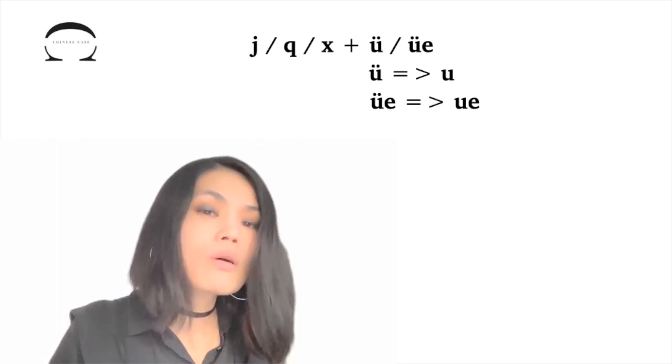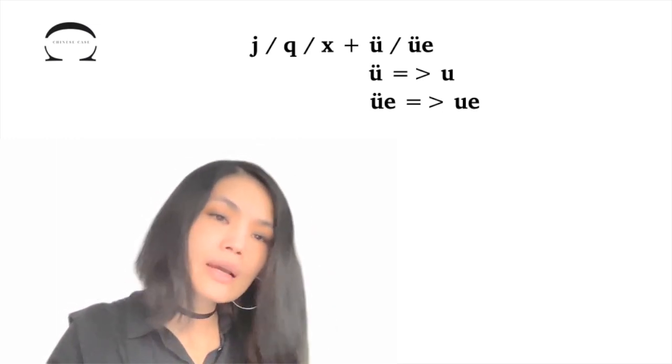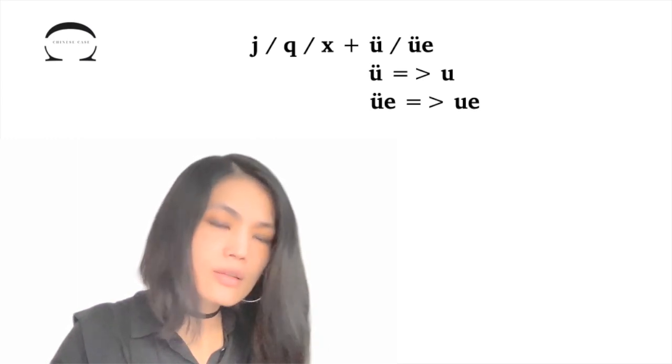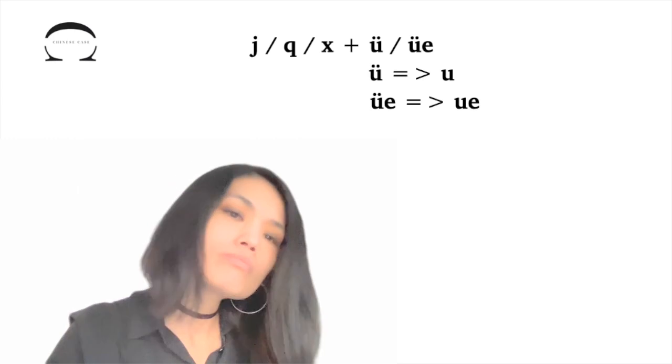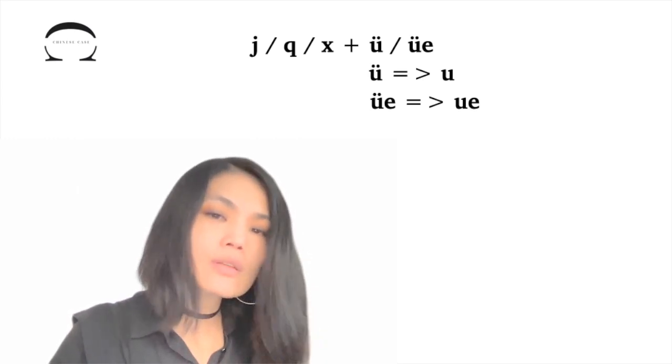If you want to know more about the forbidden pairs regarding the letters J, Q, X, or if you want to get a full picture of the Chinese vowel letter ü, you can find the relevant links in the description.